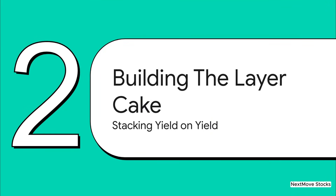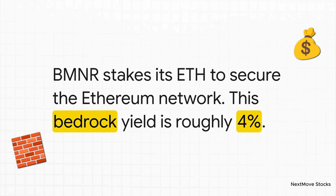Now that we've got the basic idea down, let's actually build this layer cake of yield from the ground up. We're going to use an industrial-scale operator like BitMine Immersion — their ticker is BMNR — as our case study to see how a boring 4% return could theoretically get turned into something a lot bigger. Layer one is the foundation — the bedrock that everybody already knows about. An operator like BMNR stakes its Ethereum on the main network. They run the validators, they secure the blockchain, and for doing that super important job, the network pays them. Right now, that's about a 4% yield. For almost everyone else, the story ends right here. But for us, this is just the plate that our cake is going to sit on.